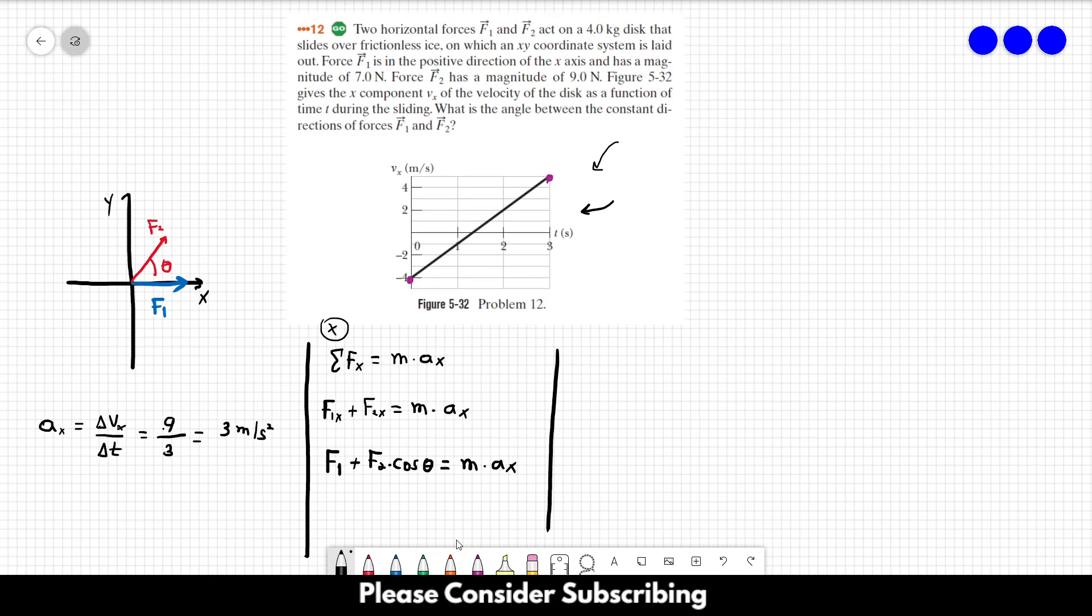We know everything in this equation except the angle, so we can solve this equation for the angle. The cosine of the angle is mass times acceleration in the x direction minus F1 over F2. So the angle is the inverse function of the cosine of M times Ax minus F1 over F2.